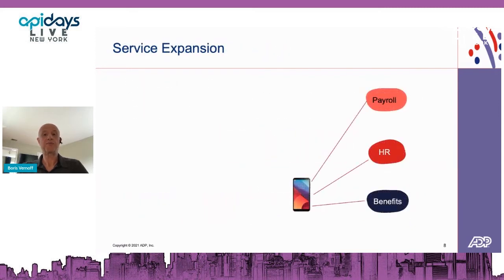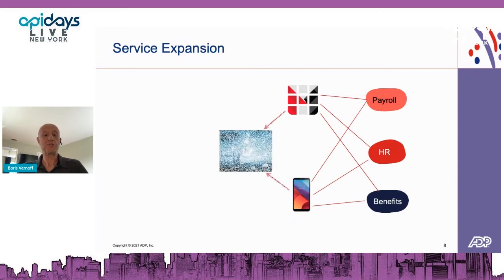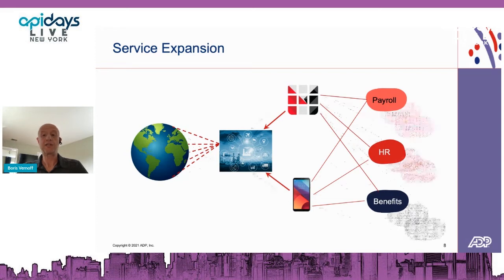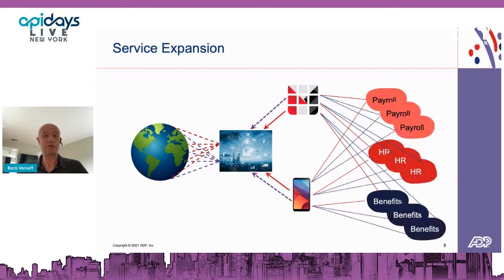It all started with a handful of API provider products delivering data to mobile customers. Then external exposure and direct API consumption via the marketplace came into the picture, with more and more customers from different industries interested in mobile solutions as well as direct access to data and capabilities via APIs. The geographical landscape has expanded as well — remember, 740,000 clients across over 140 countries. On top of this already complicated picture, additional product providers became available as we grew and continue growing through acquisitions.